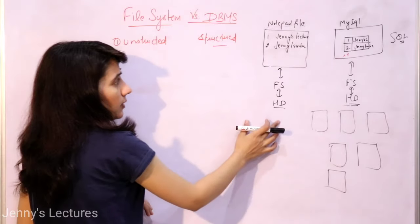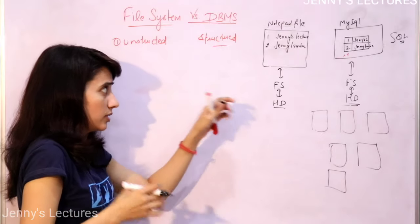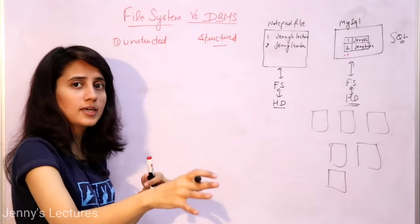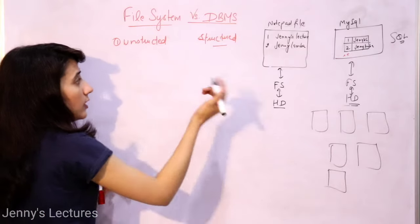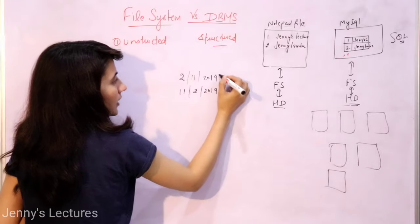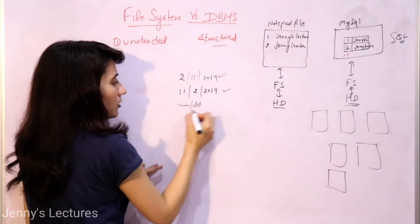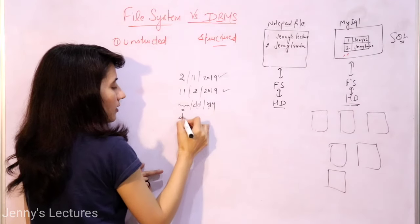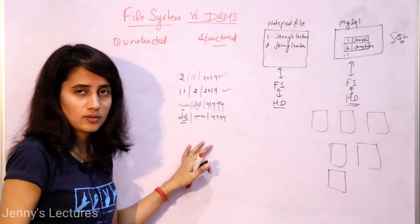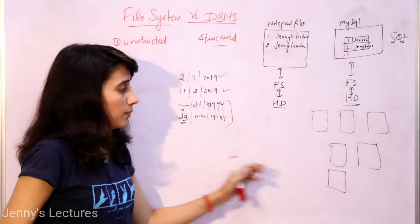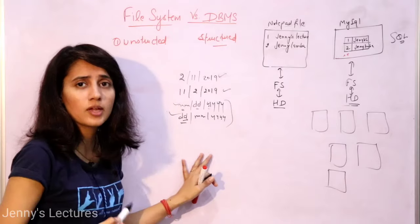One problem with unstructured data in file system is inconsistent formats. Different people may follow different formats. For example, in one file I store the date as month-day-year, and in another file I store it as day-month-year. There is no specific format defined. If we have 5 or 10 tables and each stores dates in a different format, that creates confusion and problems.